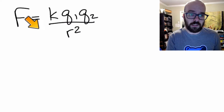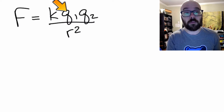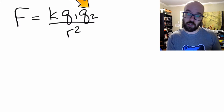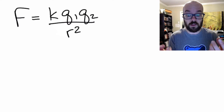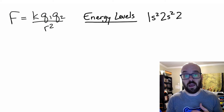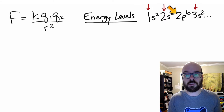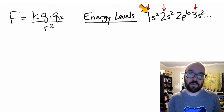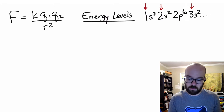The first thing we need to know is Coulomb's law. Force — the attractive or repelling force — equals k, a constant, times charge one times charge two, divided by r squared, where r is the distance between the proton and the electron. We're also going to look at energy levels. A good way to think about that is an electron configuration: 1s2, 2s2, 2p6, 3s2, et cetera. Those big numbers are the energy level or electron shell.